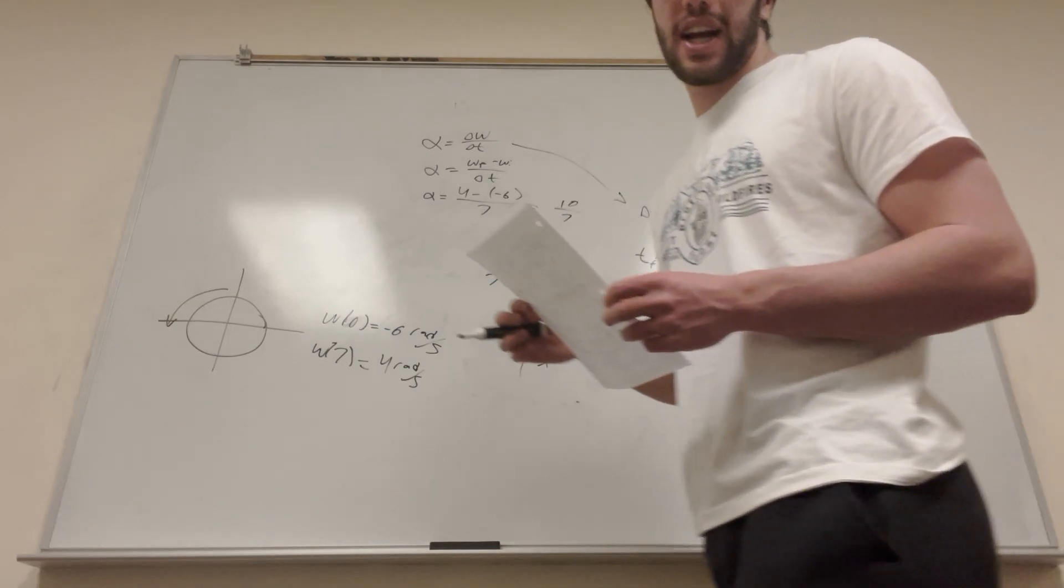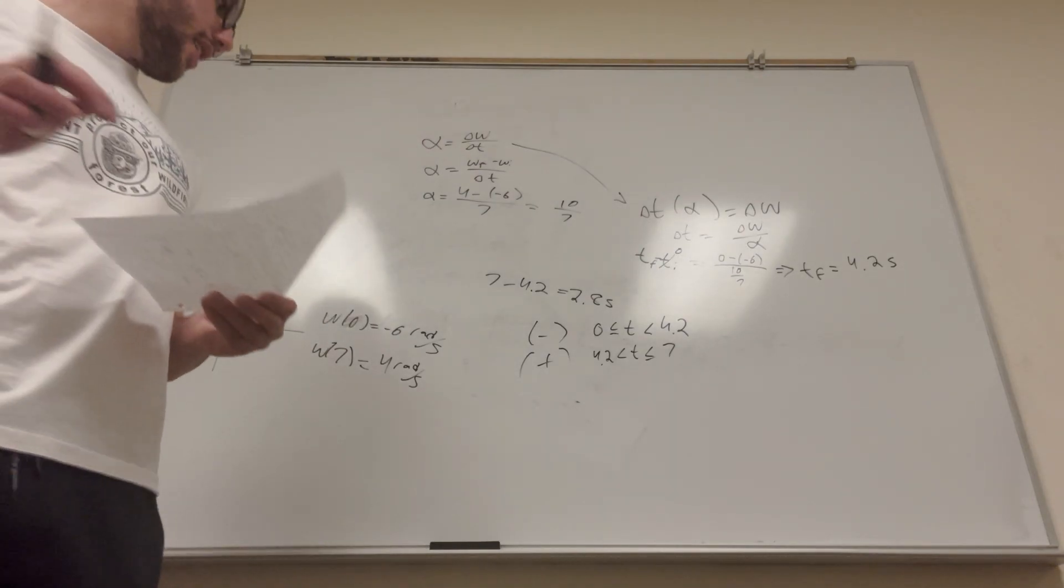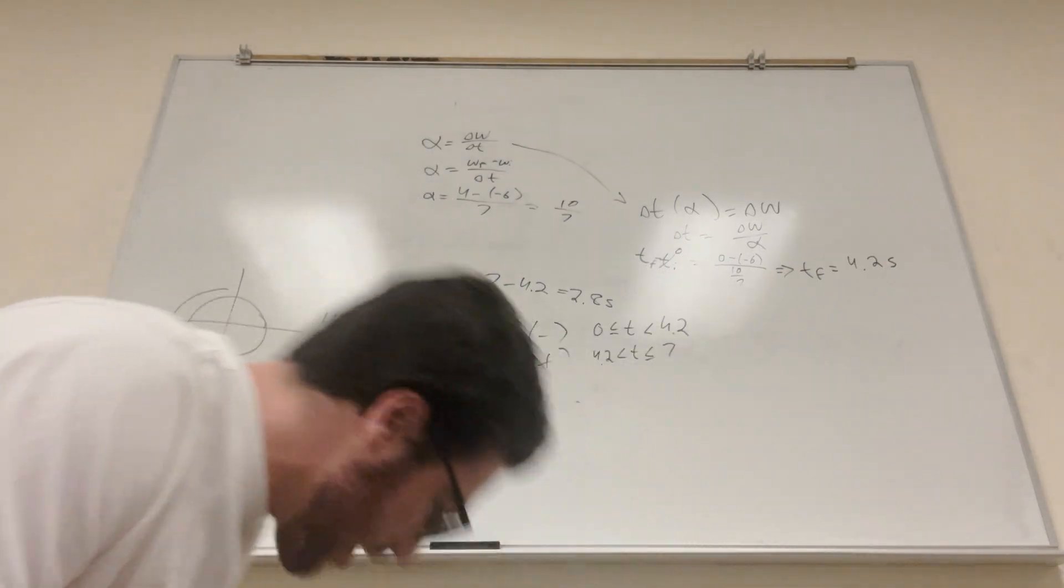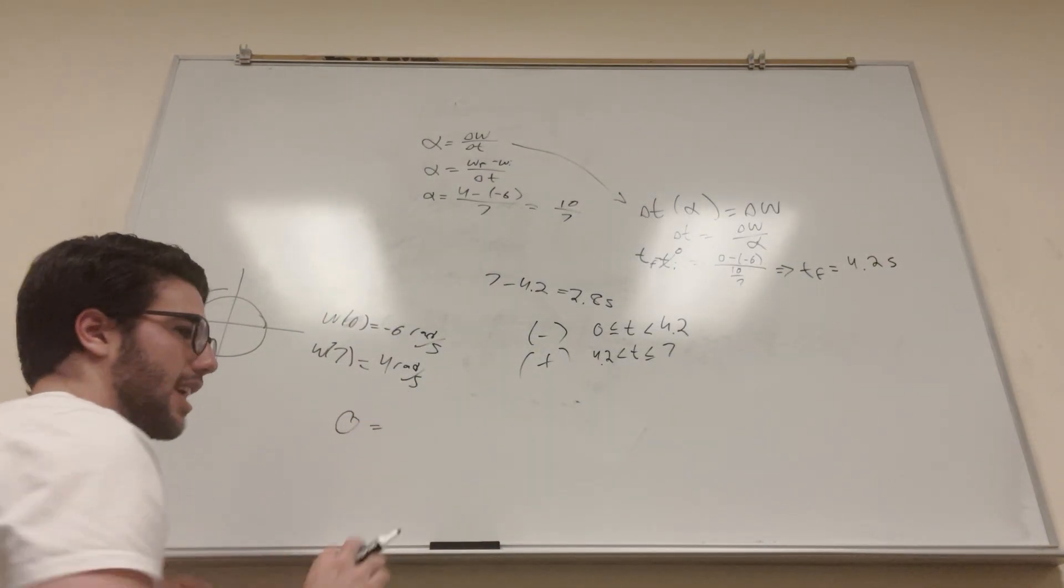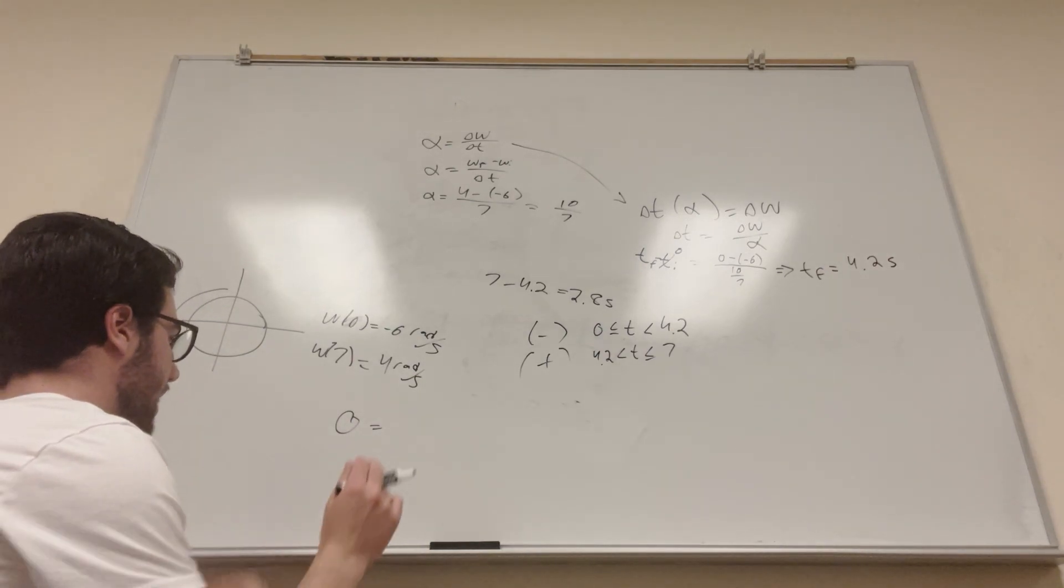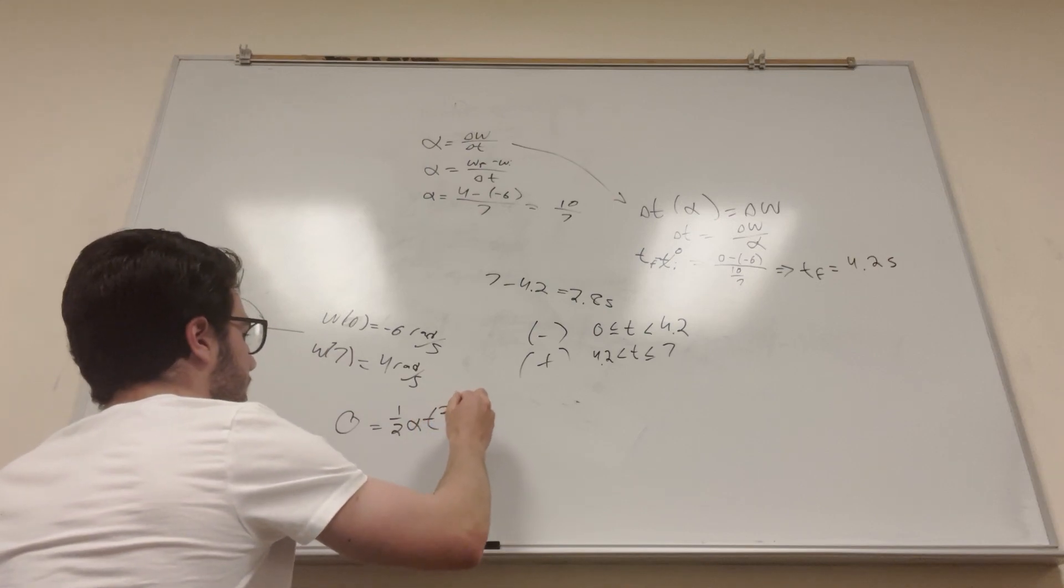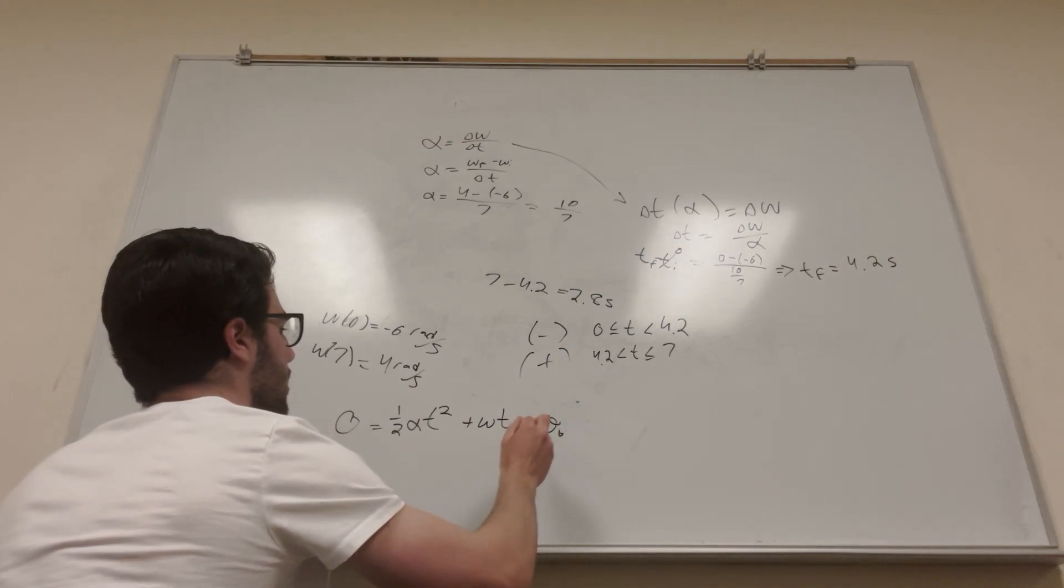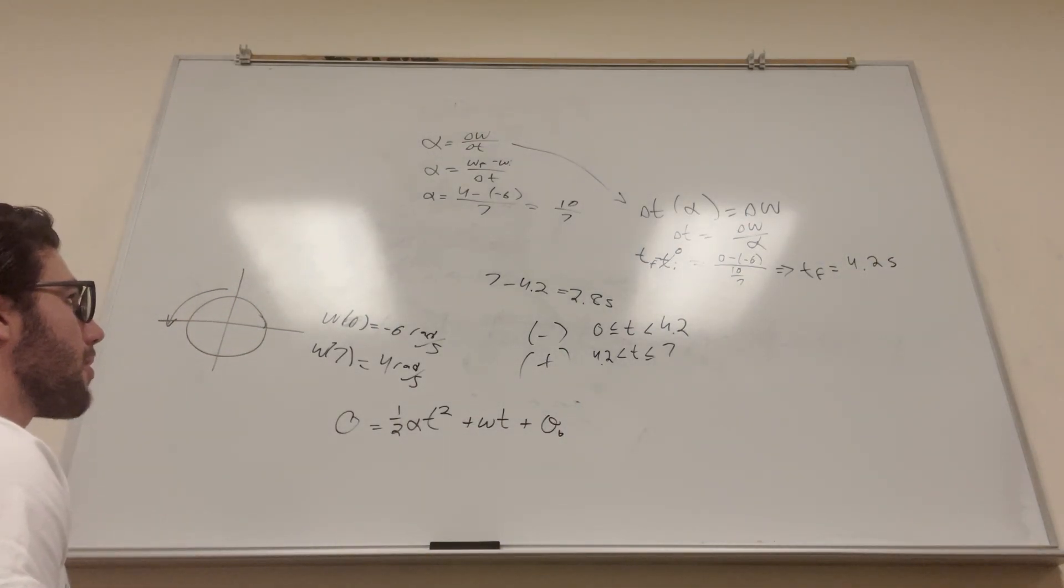And what is the final question asking for? What is the angular displacement of the wheel at seven seconds? Okay, so we're going to need another formula for this one. You can't just use the same thing again. So angular displacement is equal to, it's the same thing as linear displacement, just with angular velocity and angular acceleration. It's one-half angular acceleration t squared plus angular velocity t plus initial displacement.